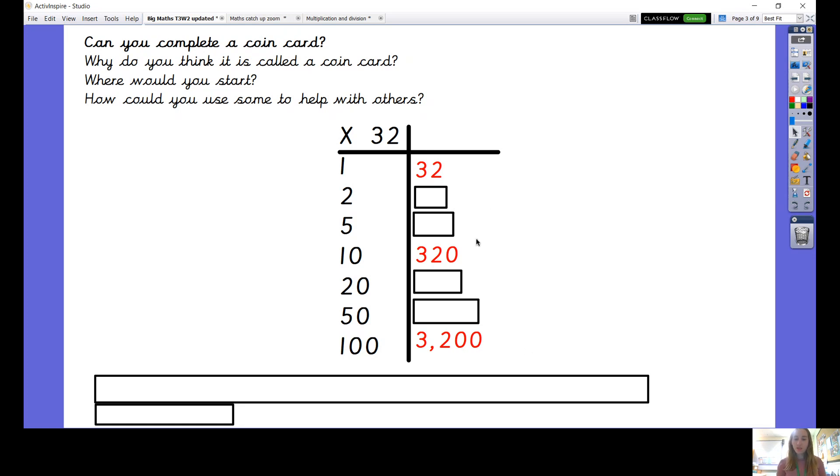I can now use these three facts to help me with some of the others. So I can take my 1 times 32 and I can double it to find 2 times 32 which is 64. I can take my 10 times 32 which is 320 and double it to make 20 times 32 which is 640. I can take my 10 times 32 again and halve it, divide it by 2, to get 5 times 32. So I've got 320 and I'm going to halve it. Half of 300 is 150 and half of 20 is 10, so half of 320 is 160 and that's 5 times 32.